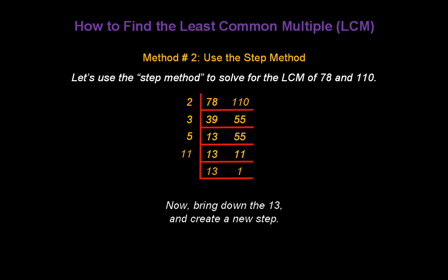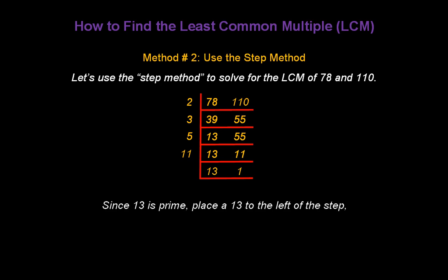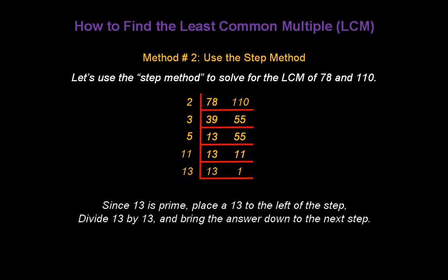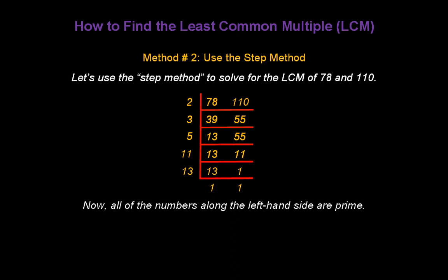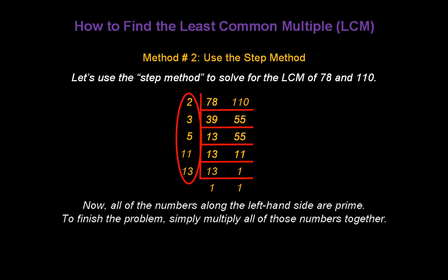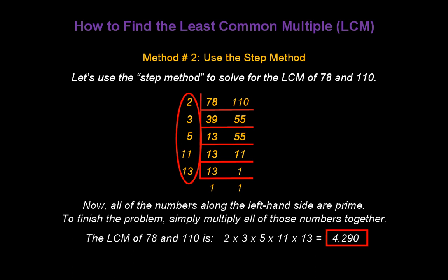Create a new step. Since 13 is prime, we're going to place a 13 to the left of the step. Divide 13 by 13 and bring that answer down to the next level — 13 divided by 13 is 1. Also bring down the remaining 1. Once you have all 1s along the bottom, you're one step away from solving the problem. All the numbers along the left-hand side are prime, and all you have to do is multiply all of those numbers together. So, the least common multiple of 78 and 110 is 2 times 3 times 5 times 11 times 13, or 4,290.